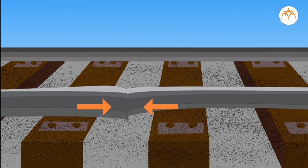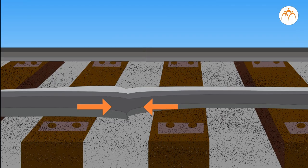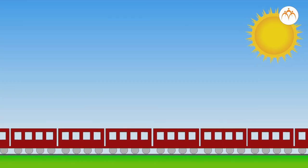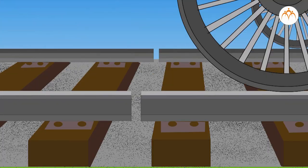And after a few days, the two tracks may also break free from one another. Gaps enable rails to expand without affecting each other.